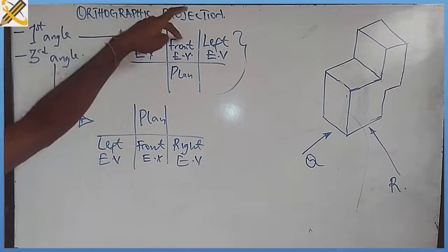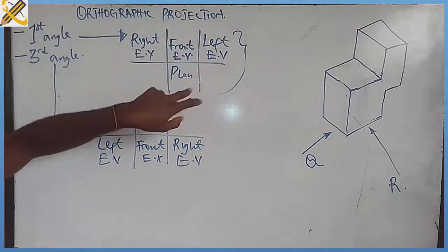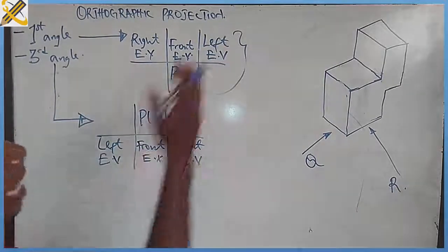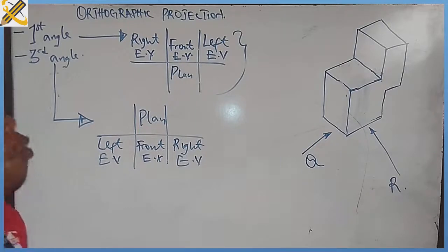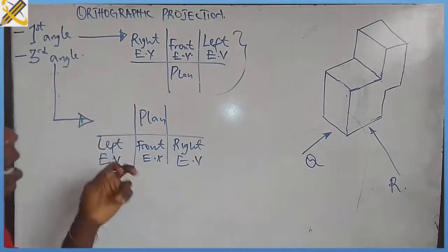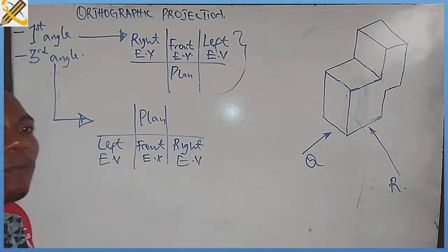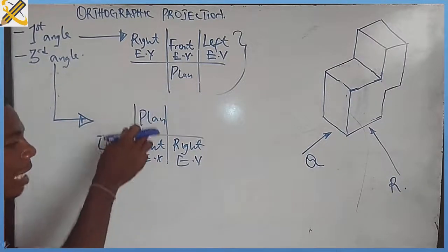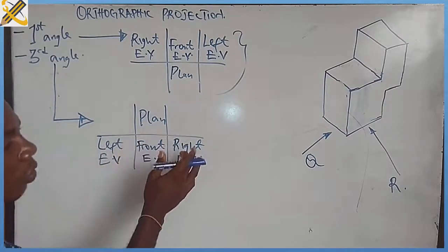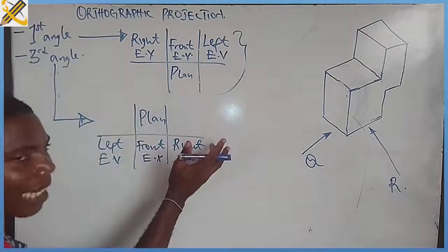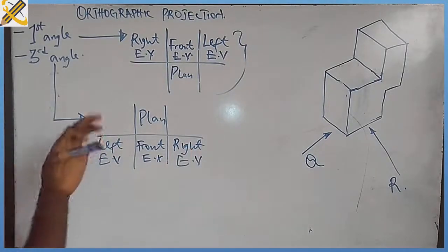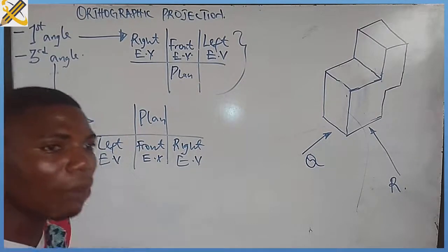In first angle, at the top we have the front elevation, and underneath the front we have the plan. On the end views, the left end view is on the right hand side, and the right end view is on the left hand side. But in third angle orthographic projection, the inverse is the case — we have the plan at the top, underneath we have the front, and the right end view is towards the right hand side while the left end view is towards the left hand side.